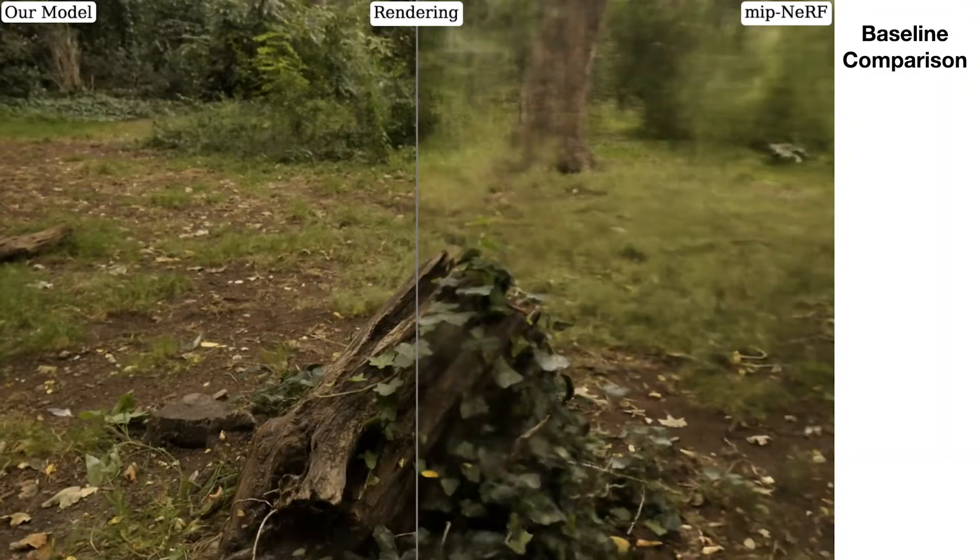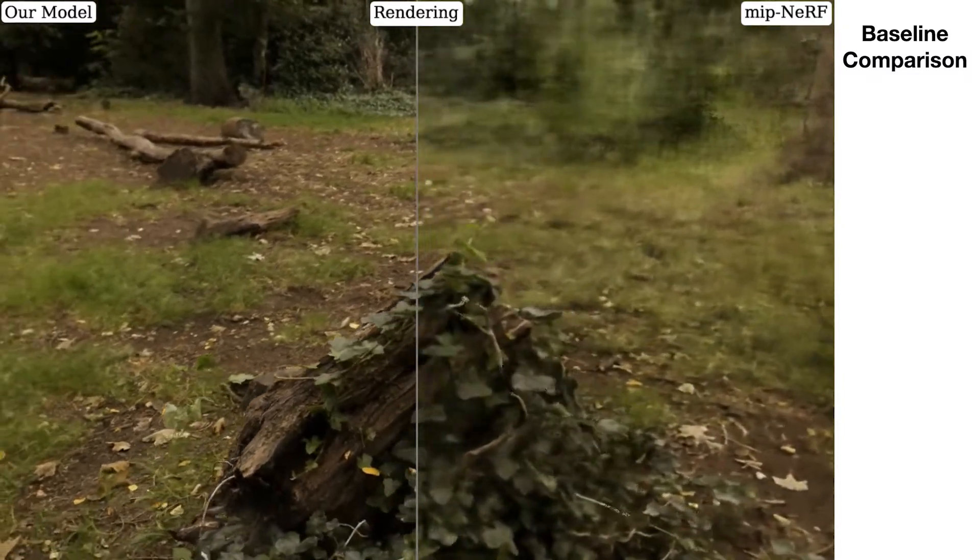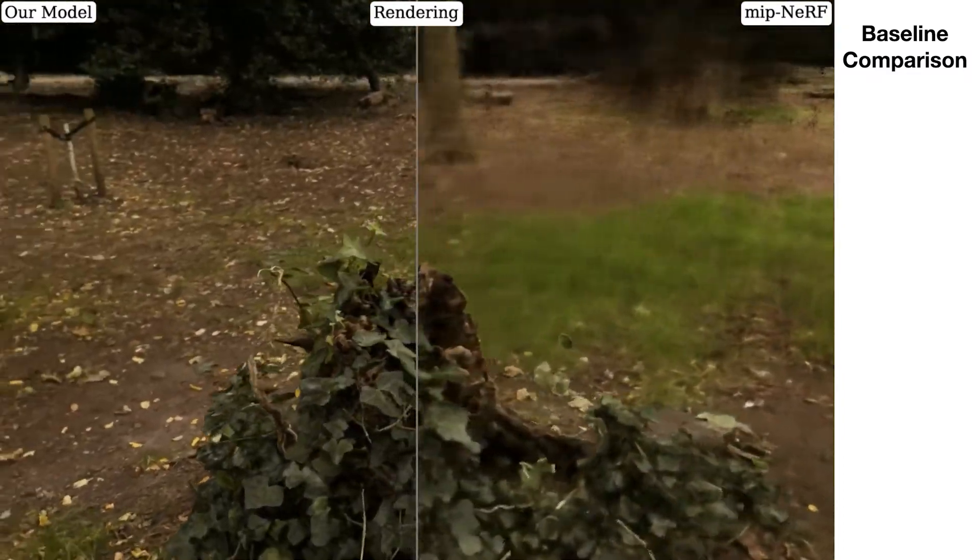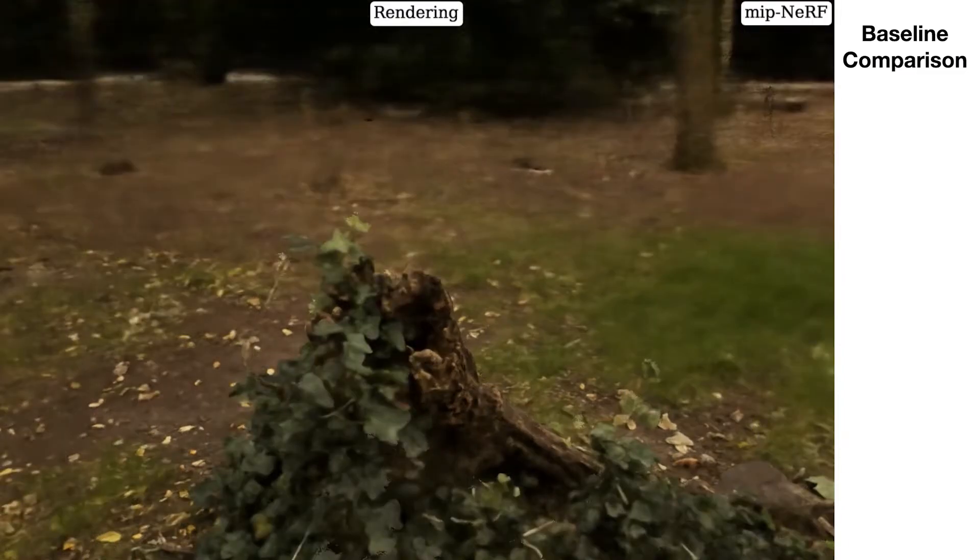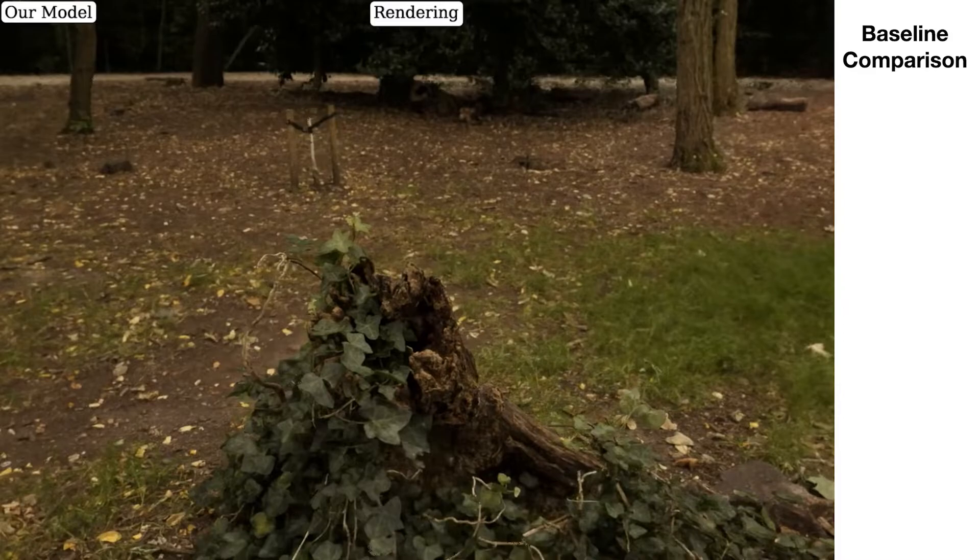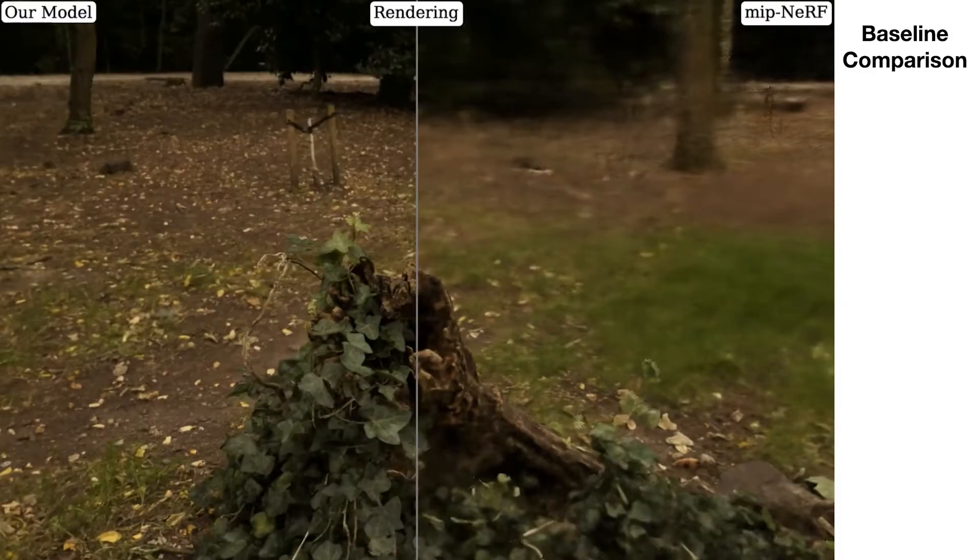Here we're comparing our model against three of the baselines used in the paper. First we'll compare against MIPNERF where we've scaled Euclidean space down to deal with MIPNERF's requirement of a bounded coordinate space. MIPNERF struggles with this scene for the reasons we've described and produces blurry renderings in the foreground and background.